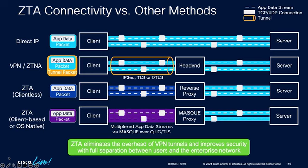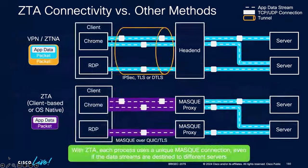With VPN, all connections from Chrome and RDP, for example, are bundled in a single VPN tunnel, individual TCP or UDP connections are fanned out at the headend to the particular servers. With Zero Trust Access, the way it works right now: each individual application gets its own MASQUE connection to the proxy. Those proxies can be in the same data center, but that's not a technical limitation — they could be in different data centers or locations. So in this case I have Chrome...